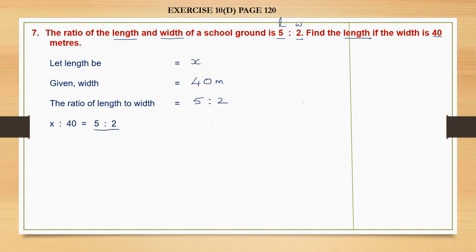5 is to 2 is already given to us — this is length and this is width. Similarly, on the other side also I must have length and width. Length we don't know, we have given it as x. Width we know is 40 meters. The order should be the same on the left-hand side as well as the right-hand side — length is to width on the left, and on the right also it is length is to width.